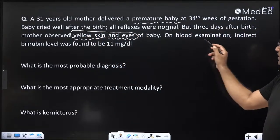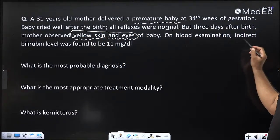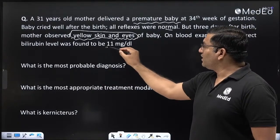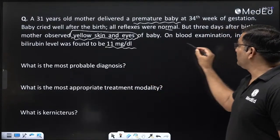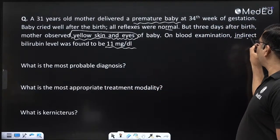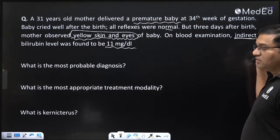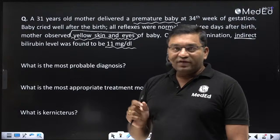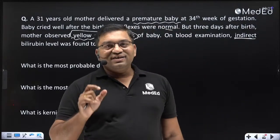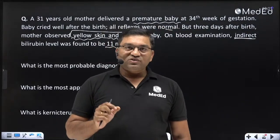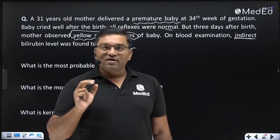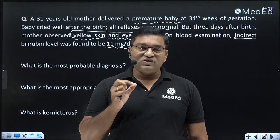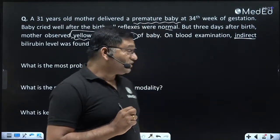On blood examination, indirect bilirubin was found to be 11 mg per deciliter. Remember that when jaundice appears on the third day of life, it is known as physiological jaundice.